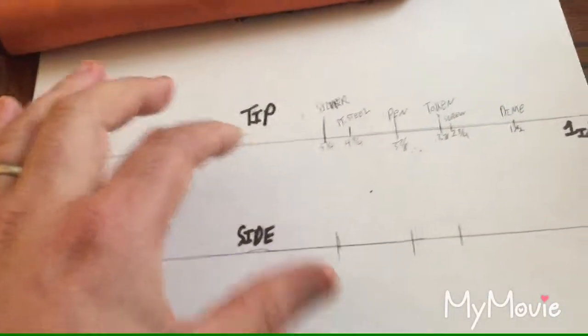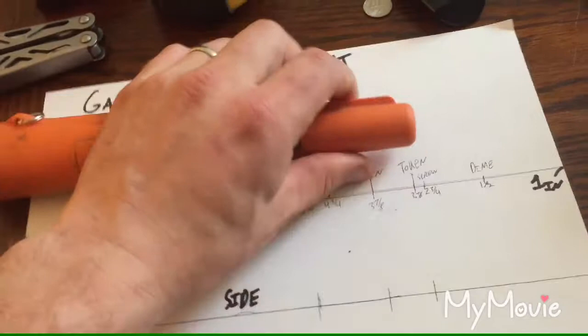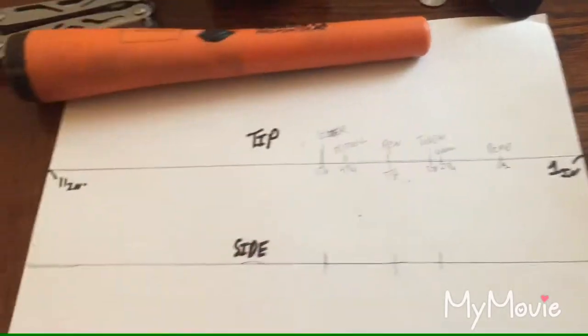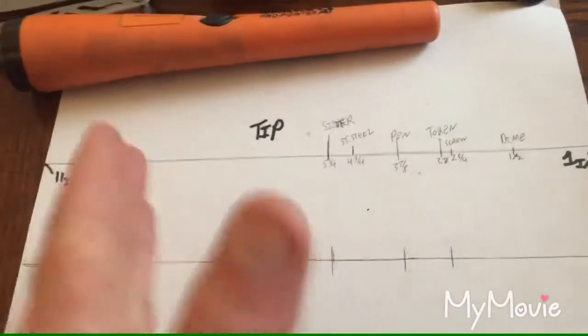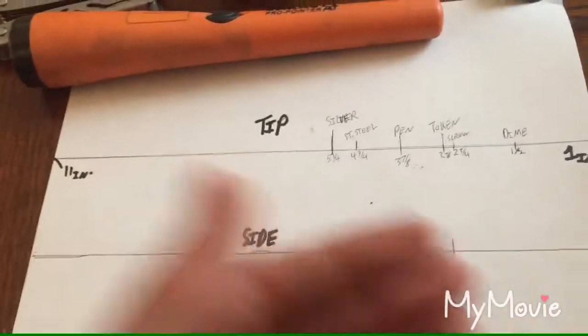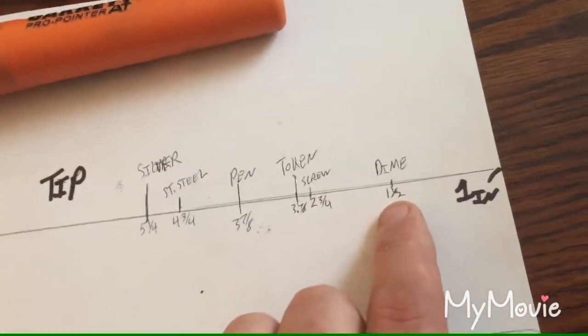So here's what I found out. You have the tip and then you have the side, and I was trying to see if there's a difference of depths that you can reach, and there's not. So I just did a couple tests and gave up.